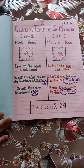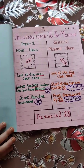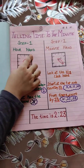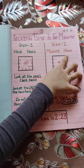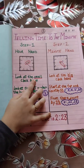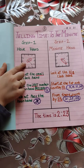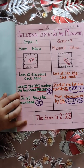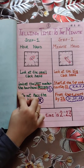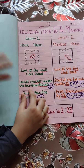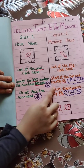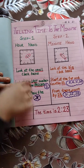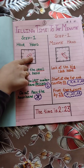My next topic is telling the time to the minute. In step one, we will see the hour hand. Look at the small clock hand. Here we will see the small clock hand and look at the last number it passed. The hour hand passed two and has not passed three, so we will not count hour hand three.